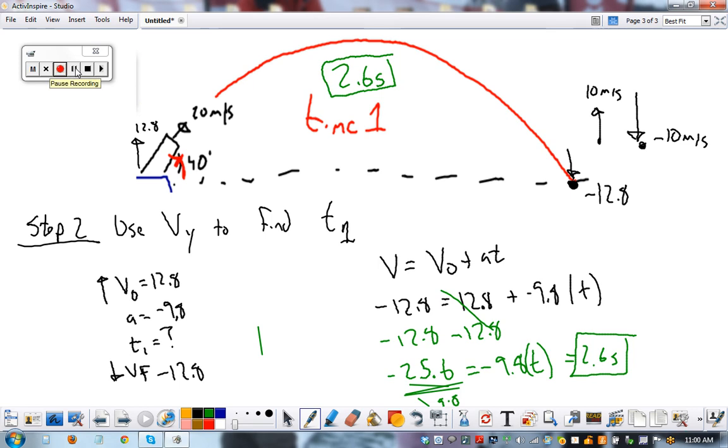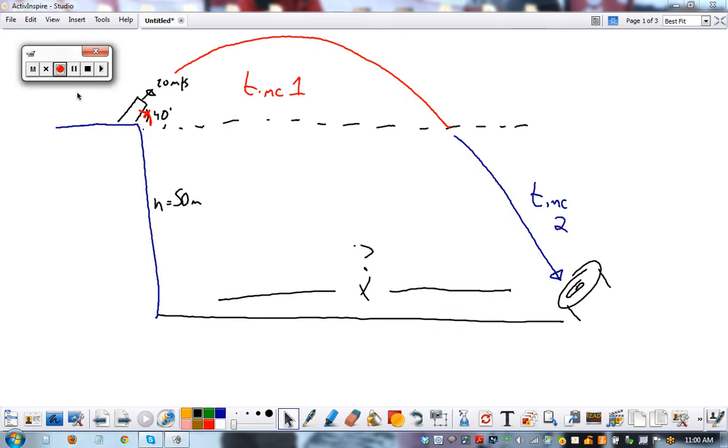Now it's time for the longest step three. In step three, find time to fall 50 meters. The challenge is, at this point right here, once it technically starts falling the 50 meters, it already has some downward velocity of negative 12.8 meters per second. It was thrown up at this point at positive 12.8. So we're going to call this the initial velocity downward.